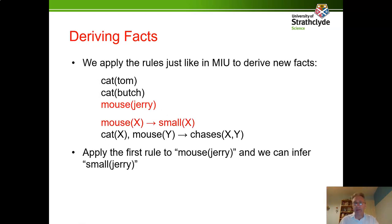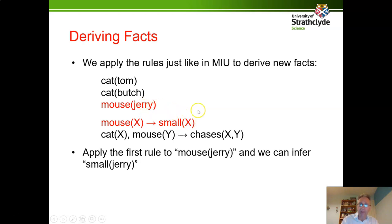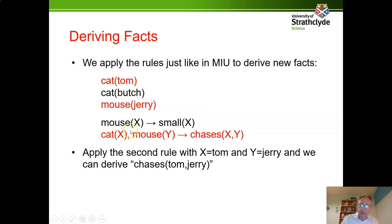The way we derive facts is by using rules, just like we did in MIU. Here is the supporting fact mouse(Jerry). We match that with mouse(X) in the rule, and it matches when X equals Jerry — X is a variable that can match any object. Therefore we can infer small(Jerry) by substituting in the variable. We can also apply the second rule: X matches to Tom because Tom is a cat, and Y matches to Jerry because Jerry is a mouse. So we can infer chases(Tom, Jerry) — Tom chases Jerry.